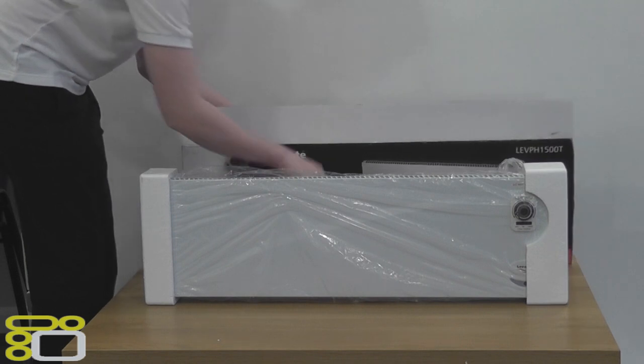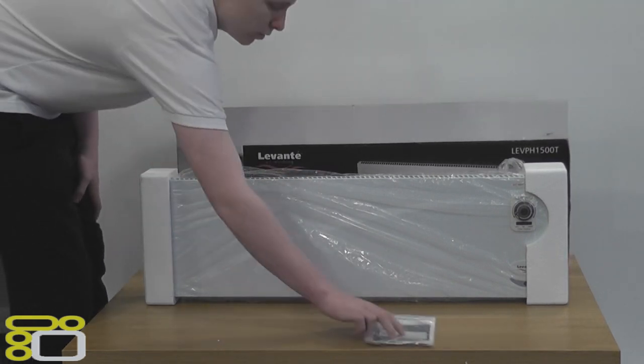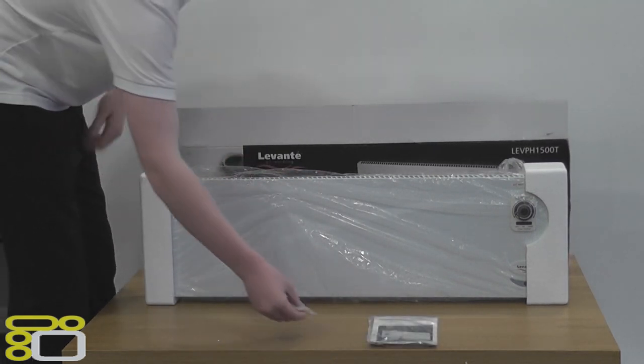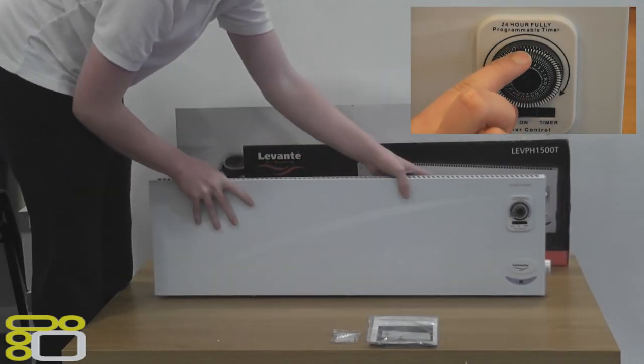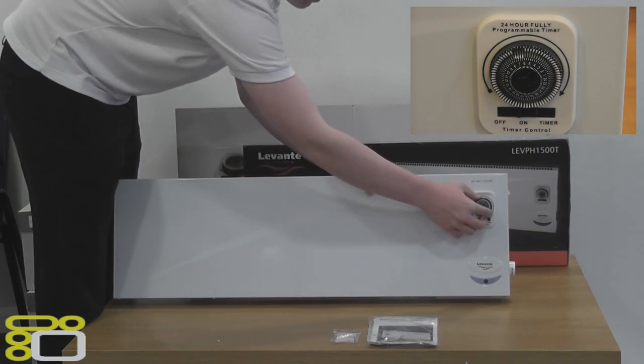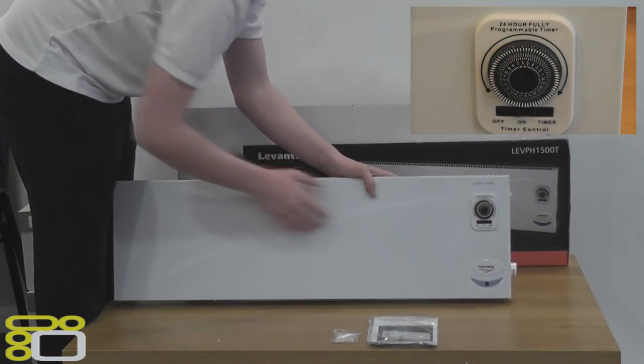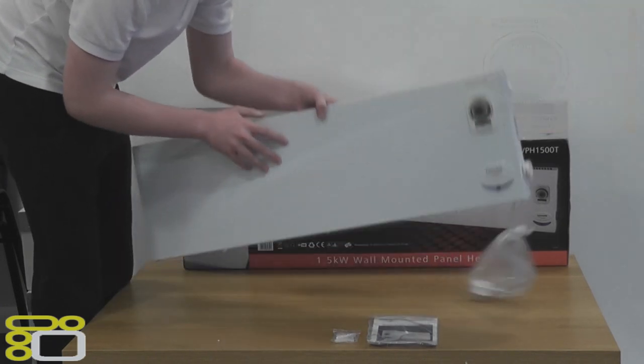Firstly we will go through what's inside. In the box we have the heater, fixings for mounting on the wall, and the instructions booklet. On the front of the heater you will find the 24 hour timer, which is programmed by simply pushing the segments inwards for heating on and outwards for heating off.